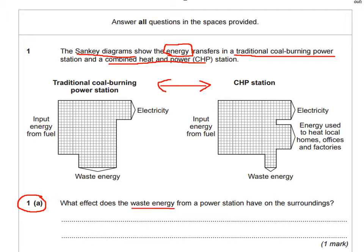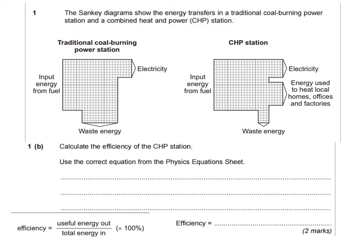The question asks: what effect does the waste energy from a power station have on its surroundings? The key word is energy. When we talk about energy, we can only talk about different types of energy. You might naturally think of pollutants or CO2, but those are not types of energy. We need to think of a type of energy that has an effect on the surroundings — we have to link the answer back to the word energy.